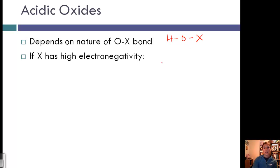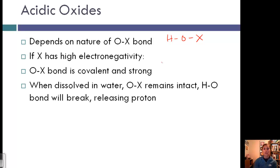There are two situations. If X has high electronegativity, the O-X bond is strong and covalent. When dissolved in water, the O-X bond remains intact, but the O-H bond is weak and breaks, producing a proton or H⁺. We call these acidic oxides because they release protons.